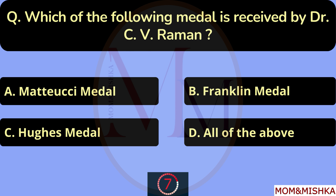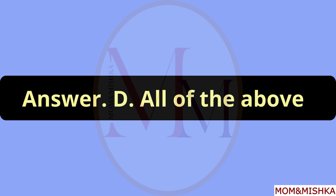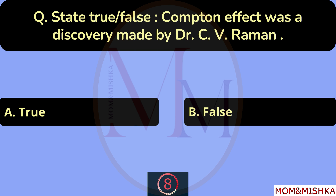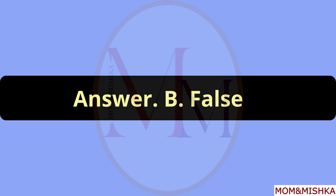Which of the following medals was received by Dr. C.V. Raman? All of the above. Option D. True or False: Compton Effect was a discovery made by Dr. C.V. Raman. False. Option B.